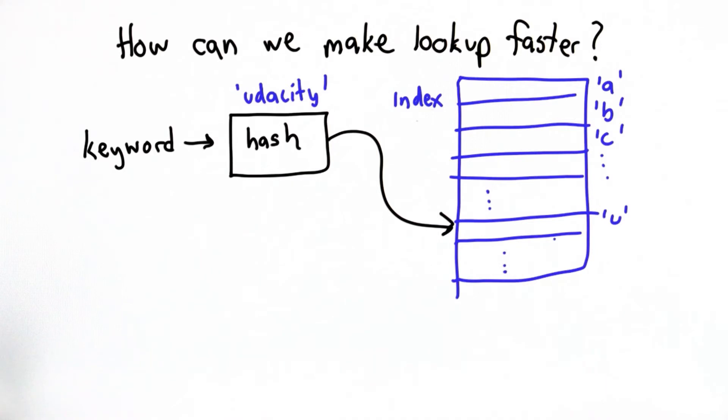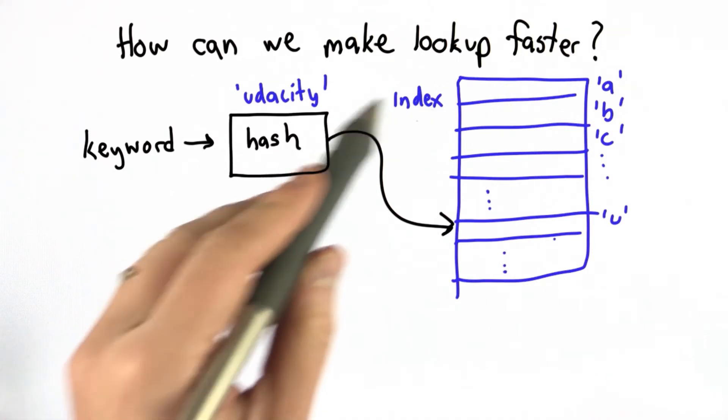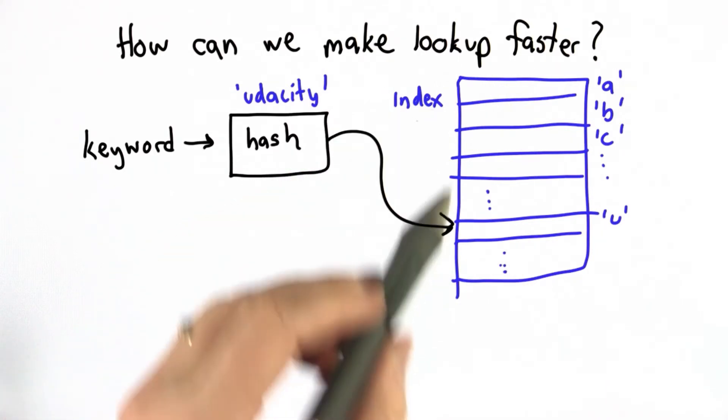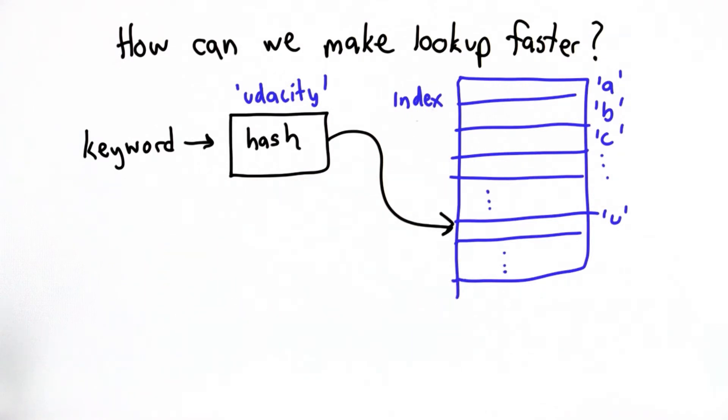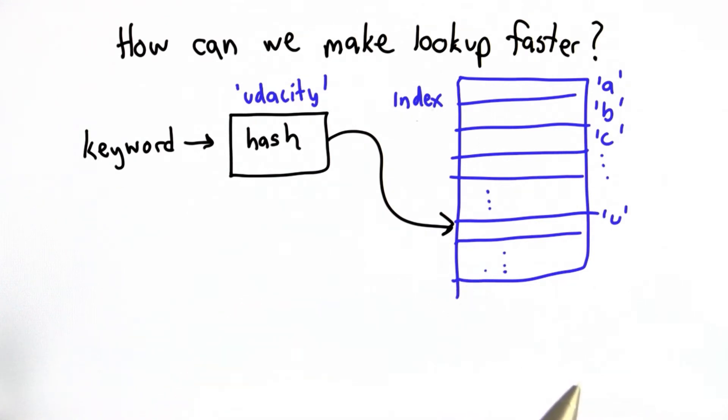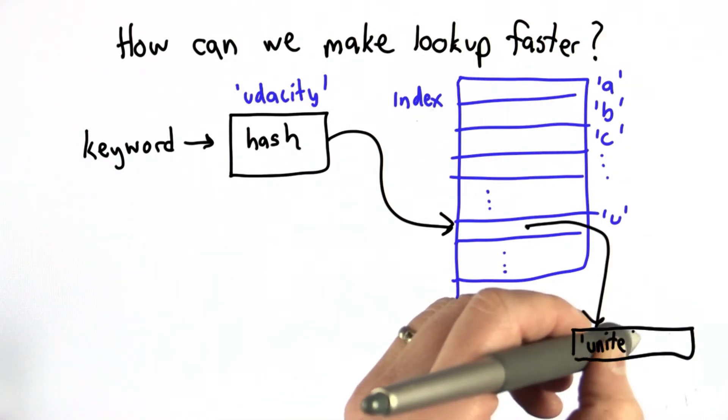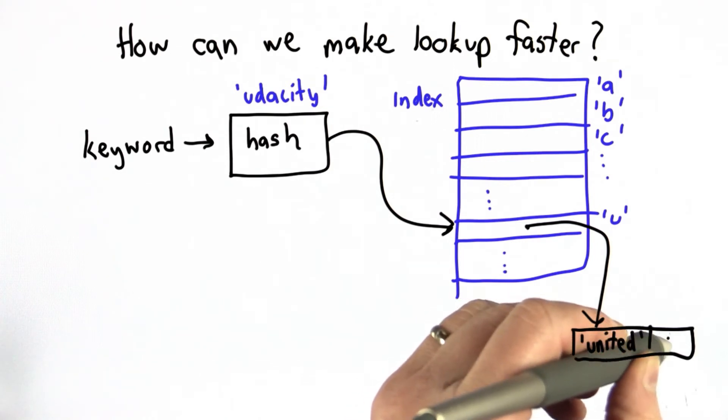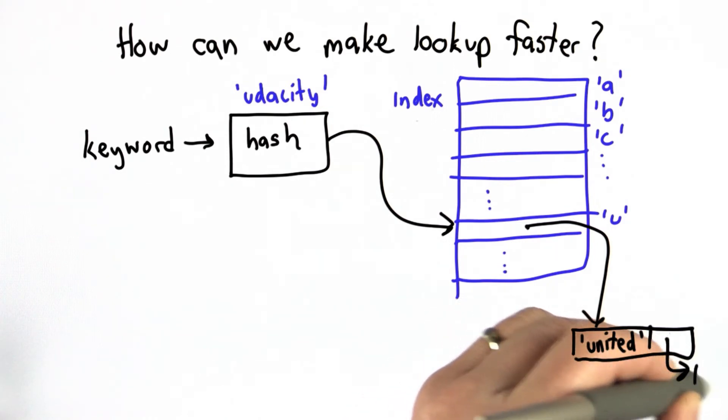And then we'd only have to look through the words that start with U. So this would allow us to do a lookup much more quickly than looking through the whole index. This isn't quite the best way to do things. If we made our places based on the letter, we have a problem if we have two words with the same first letter. So instead of having just an element here for each position, we're going to have a list of elements that would be all the words that start with U.